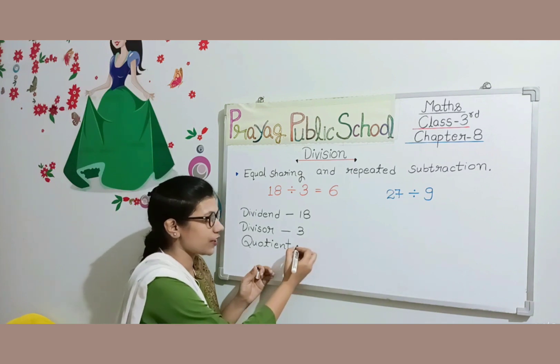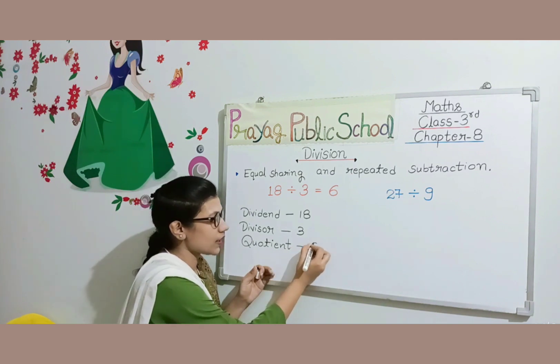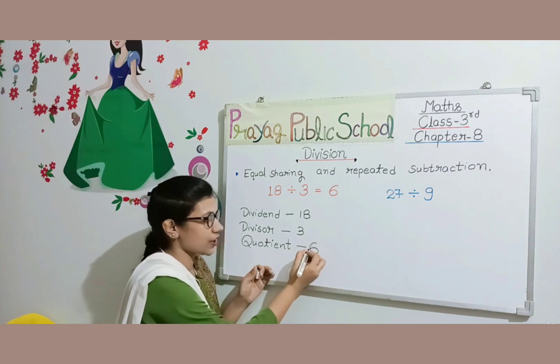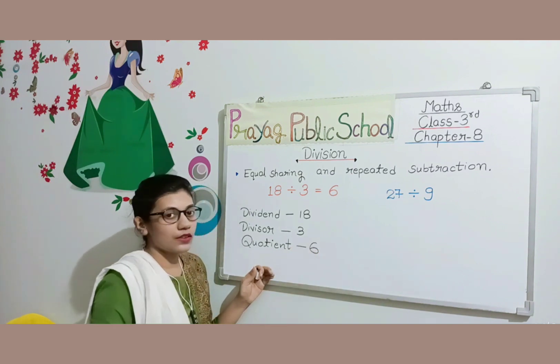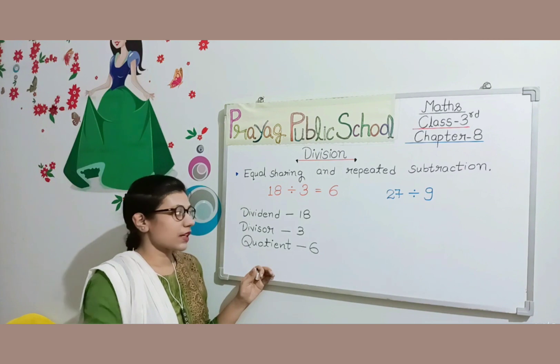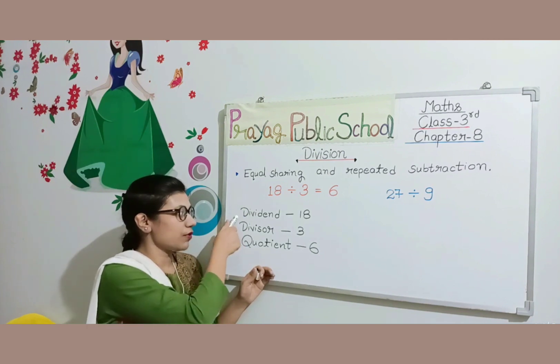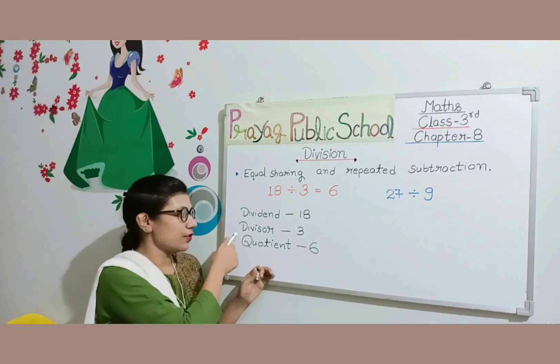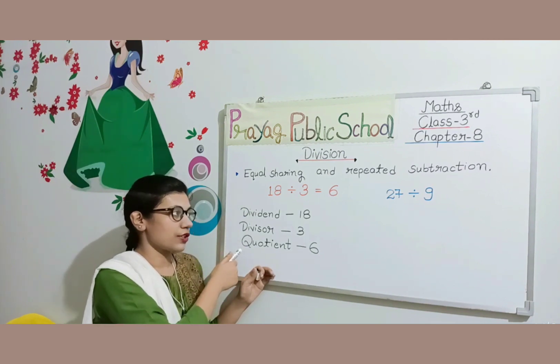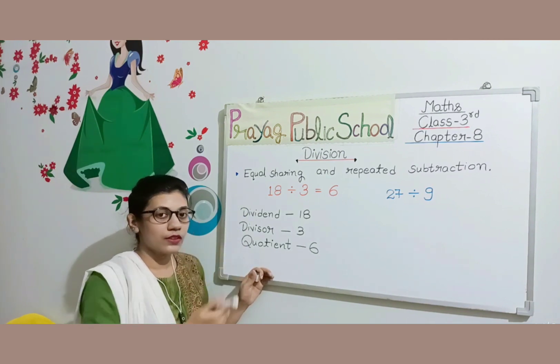The result or answer is known as the quotient, so 6 is the quotient. The three terms in division are: dividend, divisor, and quotient. You have to learn these terms.